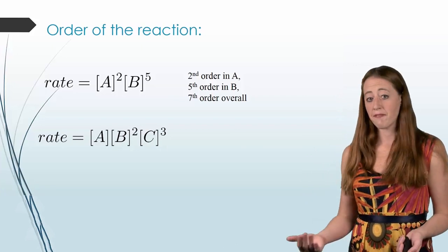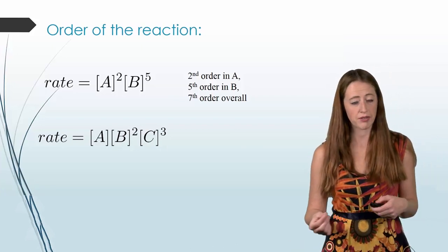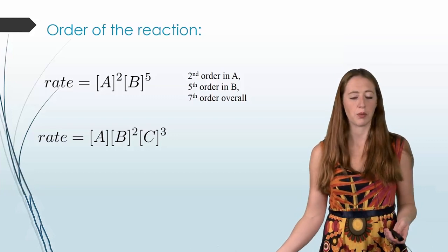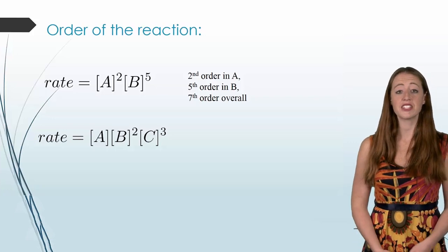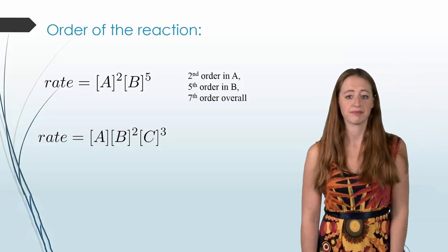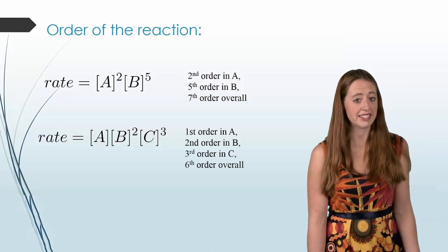Let's look at this and say that it is first order in A, because the exponent is a 1. If there's no exponent listed, it's implied a 1. We would say it is second order in B, and that is third order in C. If we add all of these up, we end up with a sixth order overall.